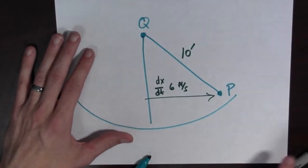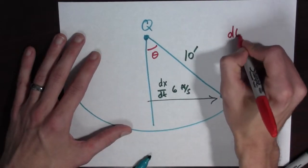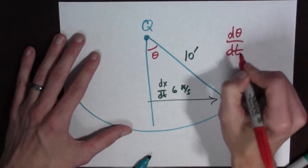And so that means dx/dt equals six feet per second because they're pushing them at a speed of six feet per second. And what we want to know is, well we have an angle theta, we want to know d theta dt.